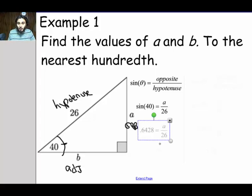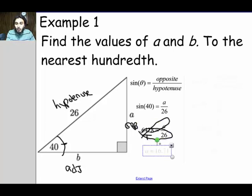And next, what we want to do is we want to cross multiply to solve for A. So we're going to get A times 1 and then 0.6428 times 26. And when we do that, we get A is equal to approximately 16.71 to the nearest hundredth. So we found A.